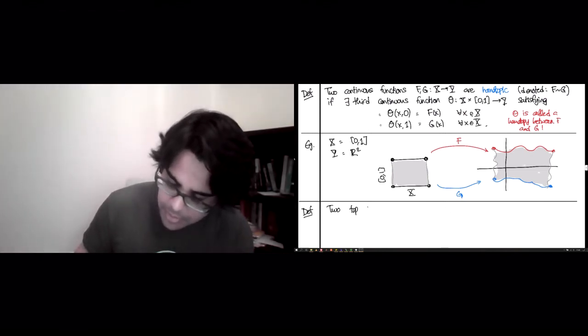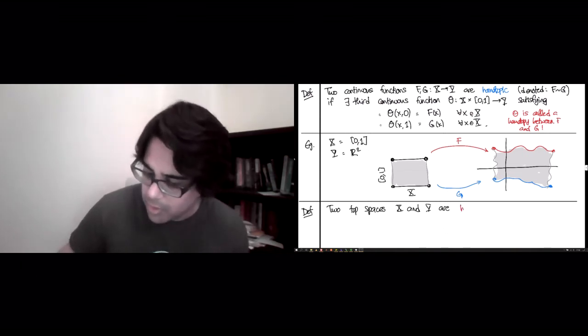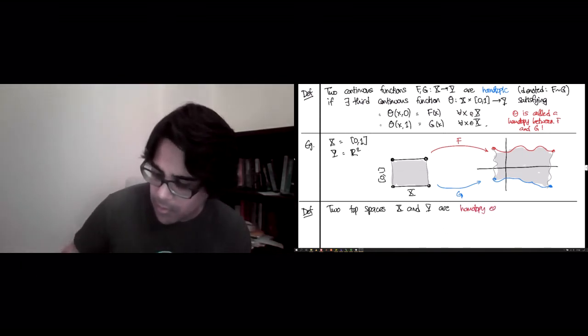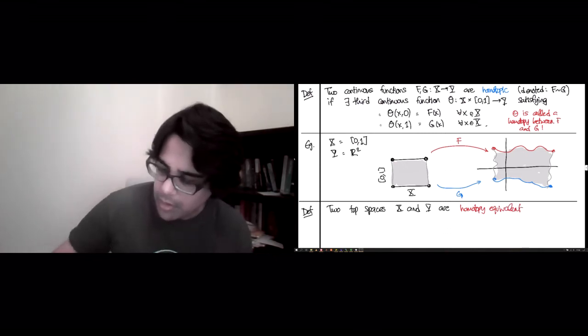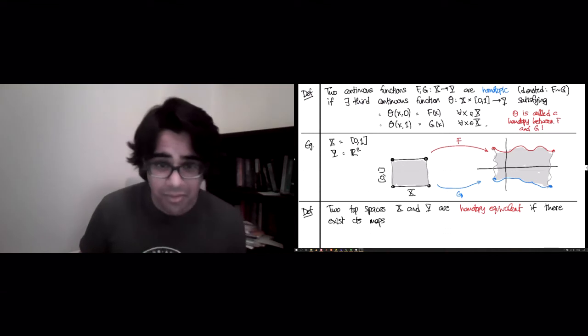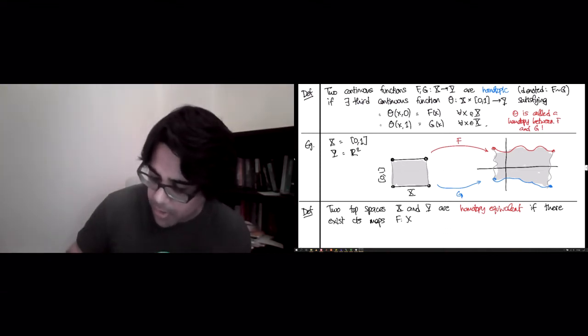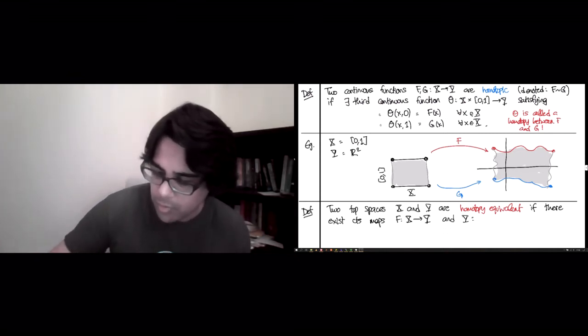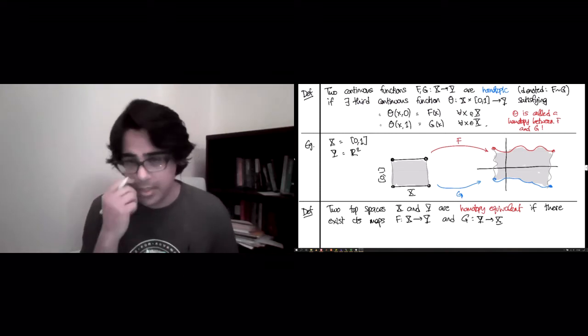Two topological spaces, X and Y, are, and here is the key notion, homotopy equivalent. If there exist continuous maps, and be careful about the directions, there's f going from X to Y, and g going back from Y to X.